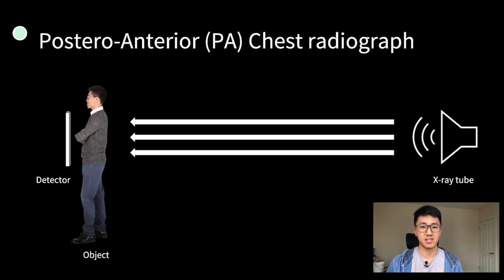In order to take a chest x-ray, x-rays are fired from an x-ray tube towards the object, which in this case is the patient's chest. After that, they then reach the x-ray detector, which is how the image is formed.